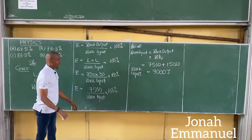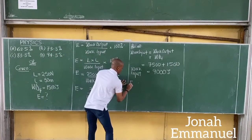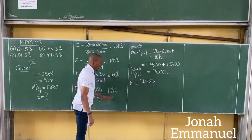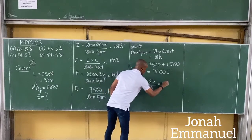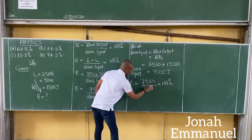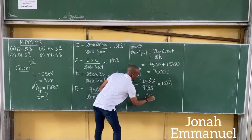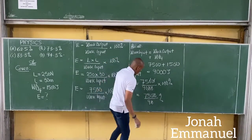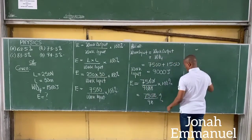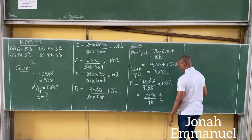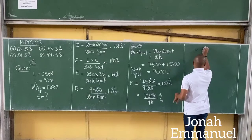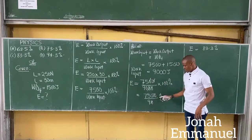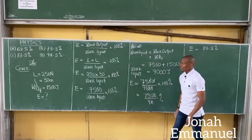So now I can calculate efficiency. Efficiency equals 7,500 over 9,000 times 100%. That gives us 83.3%. That's the efficiency of the machine.